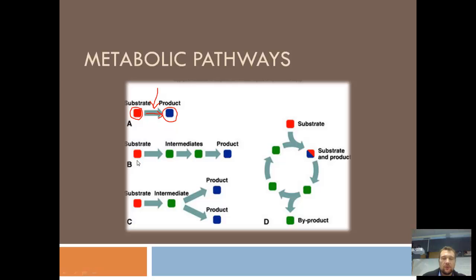You start off with your substrate, your starting chemical, and it's converted into an intermediate form, which is then converted into another intermediate form, which is then converted into a final product. Each of these steps, every time it's converted from one thing into another thing, that's controlled by an enzyme.